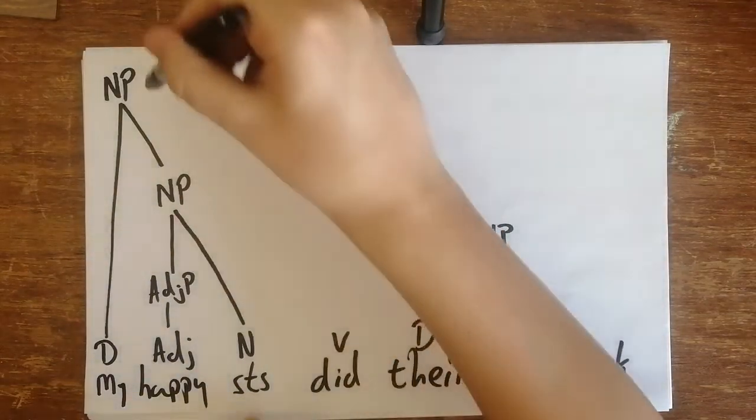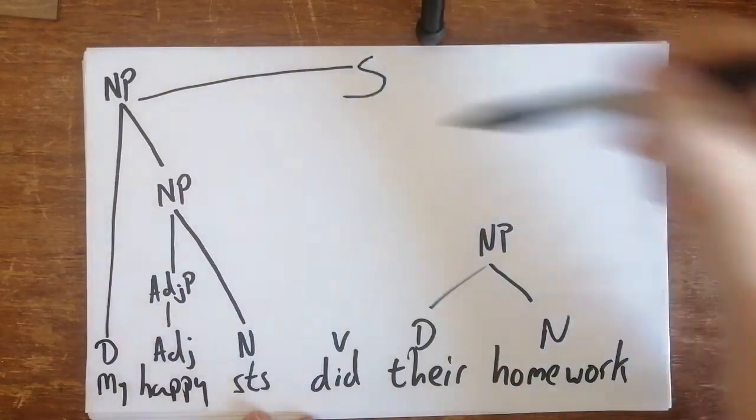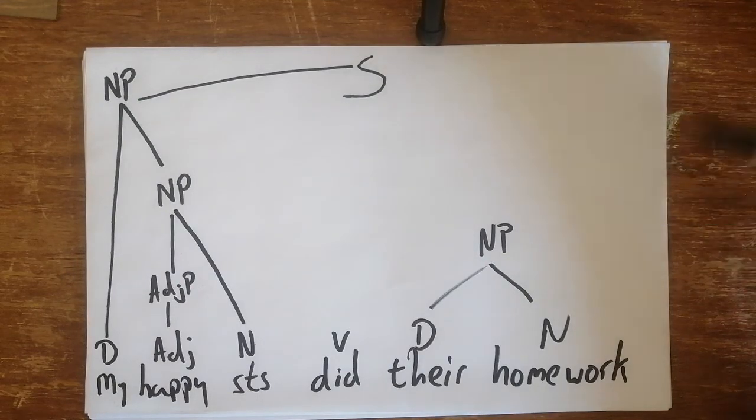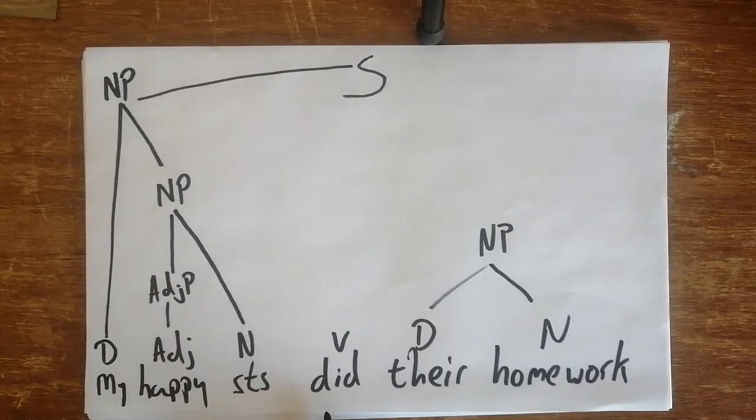So we need to send that subject all the way to sentence level. And then from sentence level we've got 'did their homework'. We need to decide if 'their homework' is optional or not.